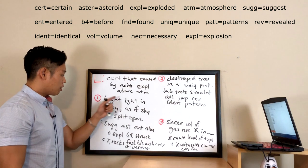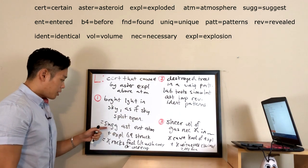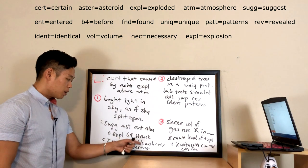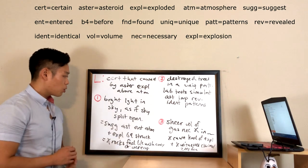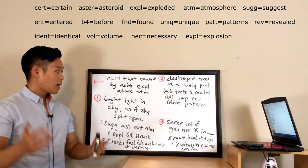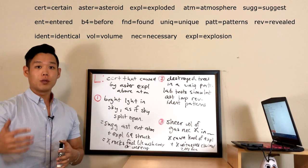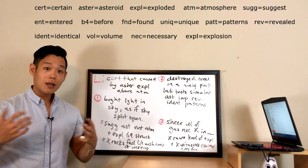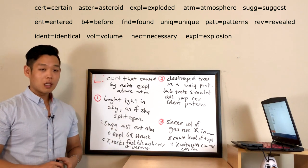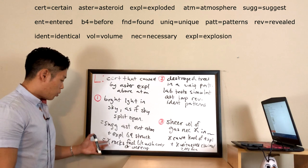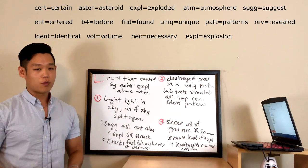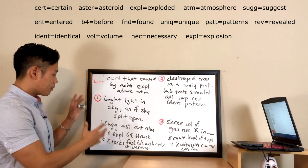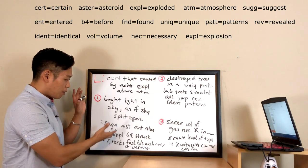The lecture's first argument: a bright light in the sky — as if the sky split open — suggests an asteroid entered the earth's atmosphere and exploded before striking the ground. This explains why no rocks were found: they were washed away before scientists arrived, or existed in such small quantities they were unrecognizable. My notes on this are simple, but I'll add detail when writing the actual essay.